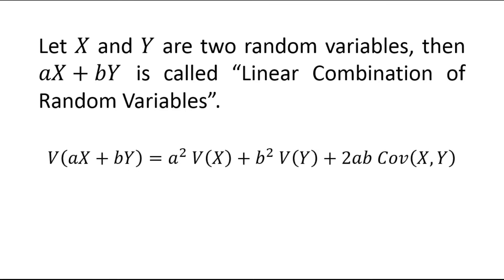The variance of this linear combination of random variables can be written as a squared times variance of x, plus b squared times variance of y, plus 2ab times covariance between x and y.